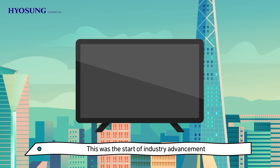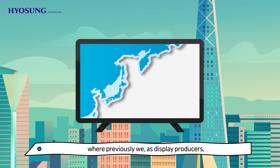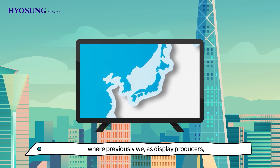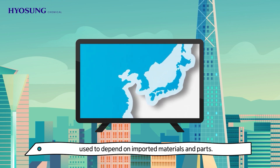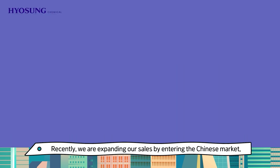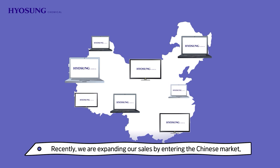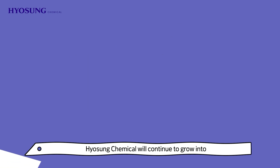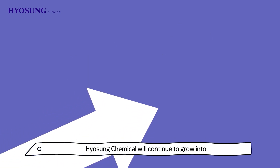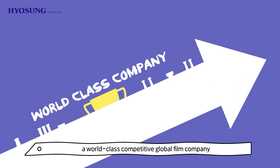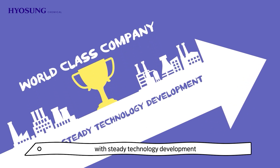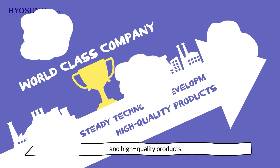This was the start of industry advancement, where previously, we, as display producers, used to depend on imported materials and parts. Recently, we are expanding our sales by entering the Chinese market, the largest display market. Hyosung Chemical will continue to grow into a world-class competitive global film company, with steady technology development and high-quality products.